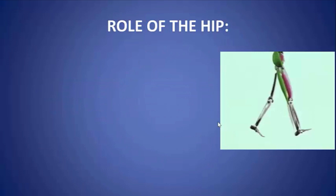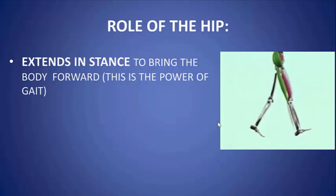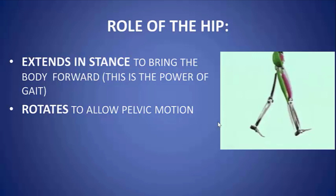We're going to talk about each individual joint and what happens at that joint in gait. Here you can see the limb is about to accept weight and begin stance phase. Both the gluteus maximus, which provides 80% of the hip extension power, and the hamstrings, which provide the remainder, are shown in green — they're about to start contracting concentrically to bring the hip into extension and bring the center of mass forward. This is the real power of gait in the normal state.